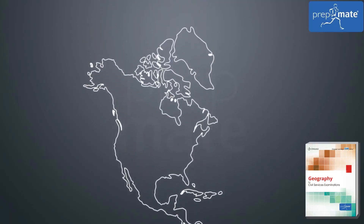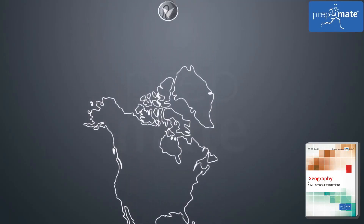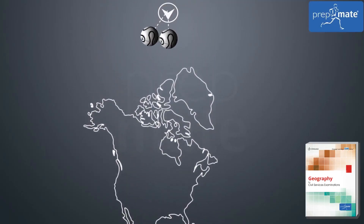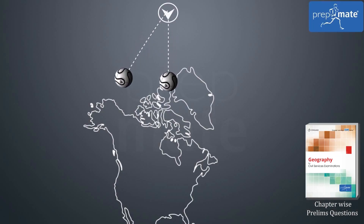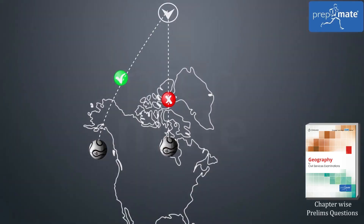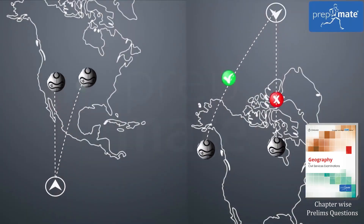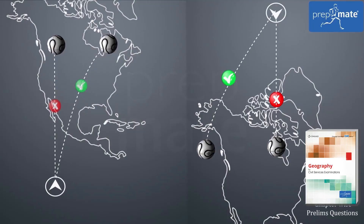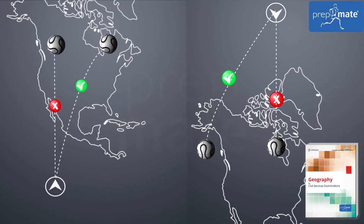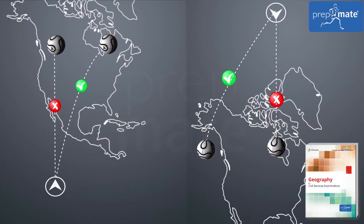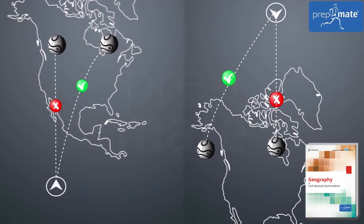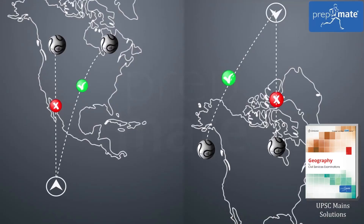Now, let us pretend you are standing at the North Pole. When you throw the ball to your friend, it will again appear to land to the right of him. But this time, it is because he is moving faster than you are and has moved ahead of the ball. This apparent deflection is the Coriolis effect. Thus, we can safely conclude that on account of the Coriolis effect, all fluids such as wind and ocean currents move towards their right side in the Northern Hemisphere.